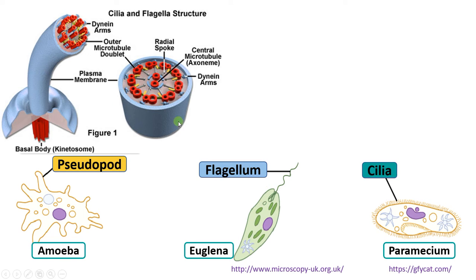The next two structures — flagellum and cilia — both share the same structure of a eukaryotic flagellum or cilia. As you see, it is made up of microtubules with a nine plus two arrangement: nine doublets of microtubules with two central singlet microtubules at the center.